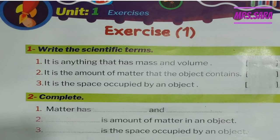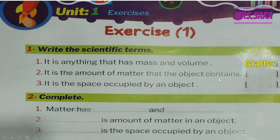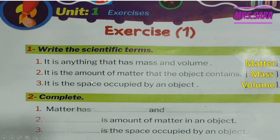Now some questions: write the scientific term. Number one — anything that has mass and volume. When you see the magic words 'anything,' 'mass,' and 'volume' together, this means matter. Number two — the amount of matter that the object contains. So mass is the amount of matter that the object contains. Number three — the space occupied by the object. When you see the magic word 'space,' we're talking about volume.